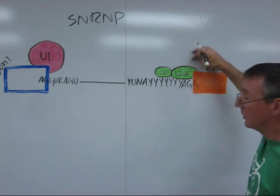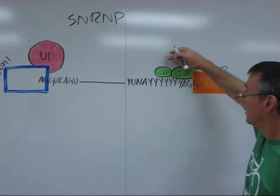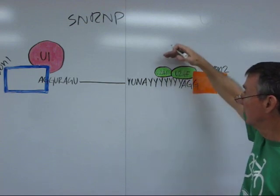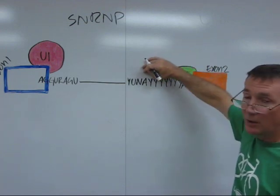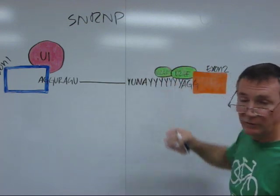Two of these bind. One of them binds right at the acceptor site. Next one binds to the polypyrimidine tract. Next to that, they're extending out toward the branch point, toward this A.